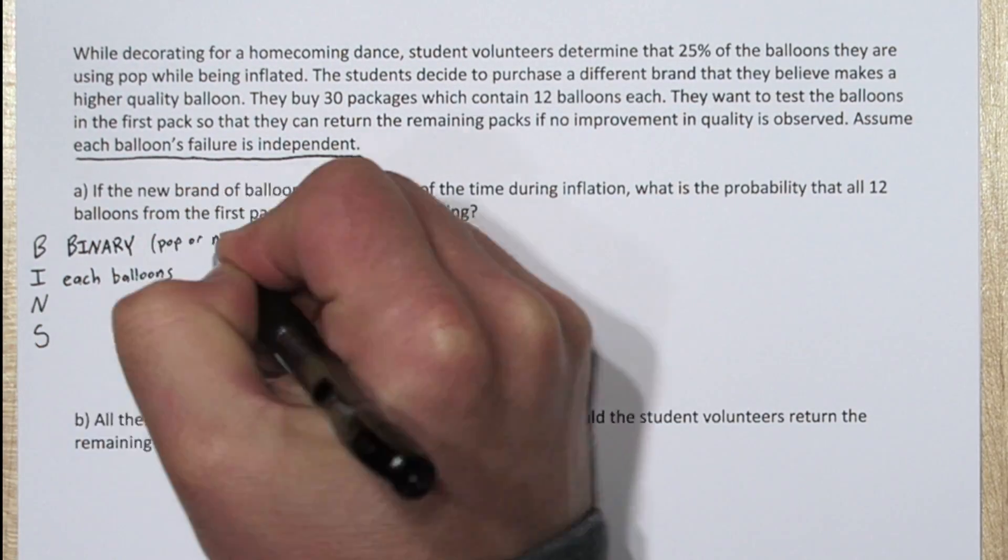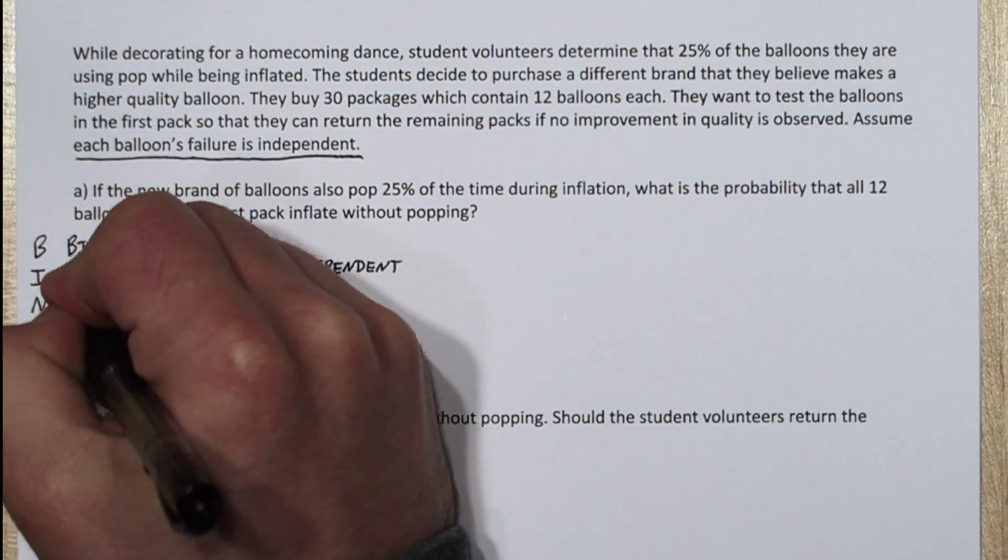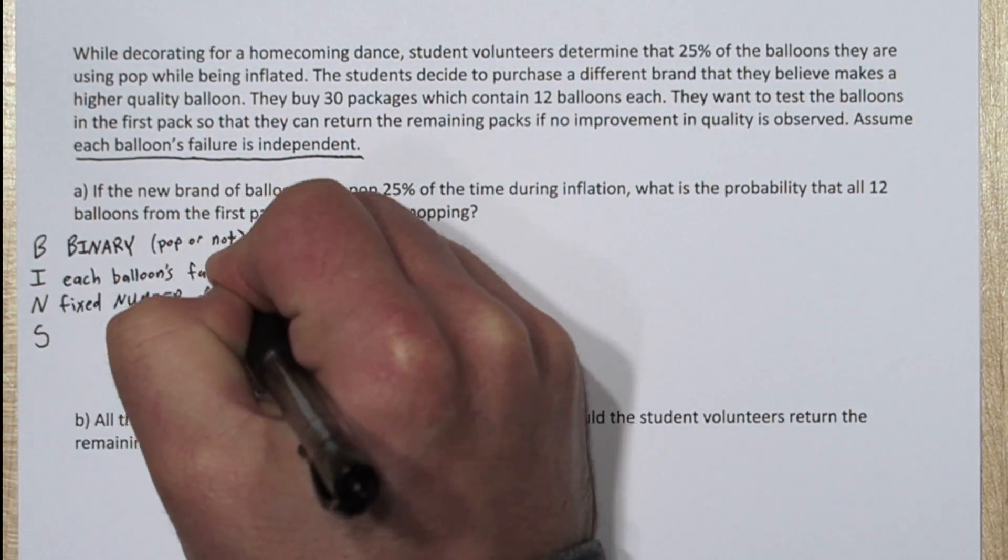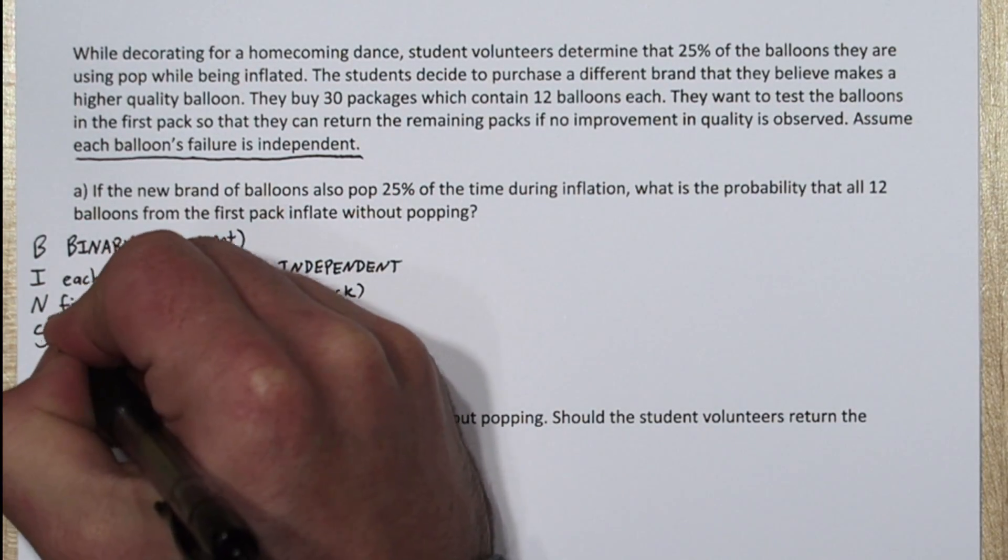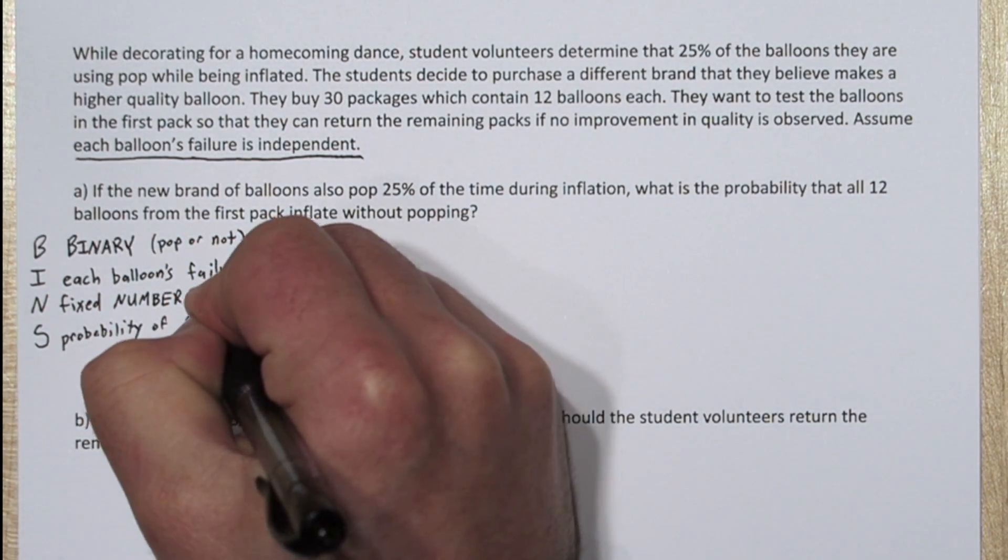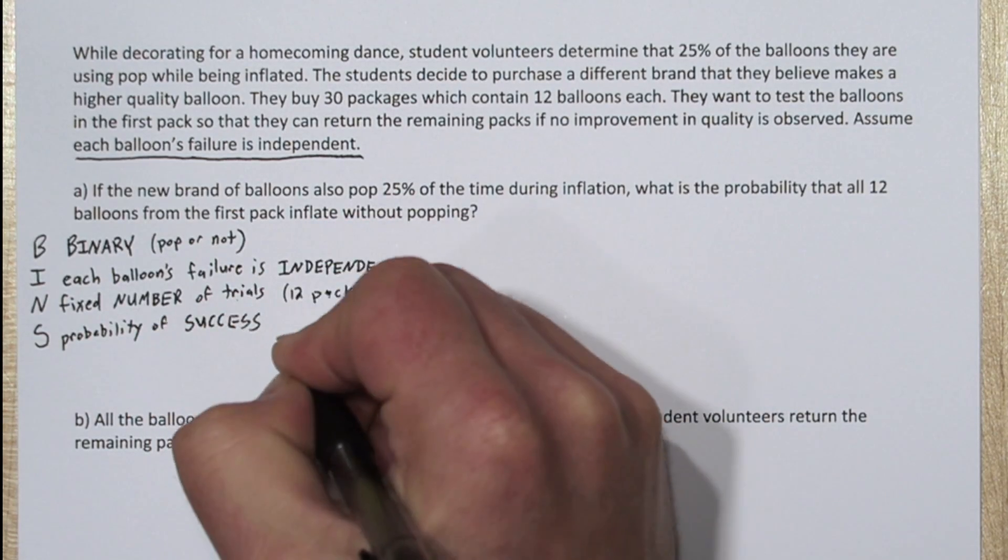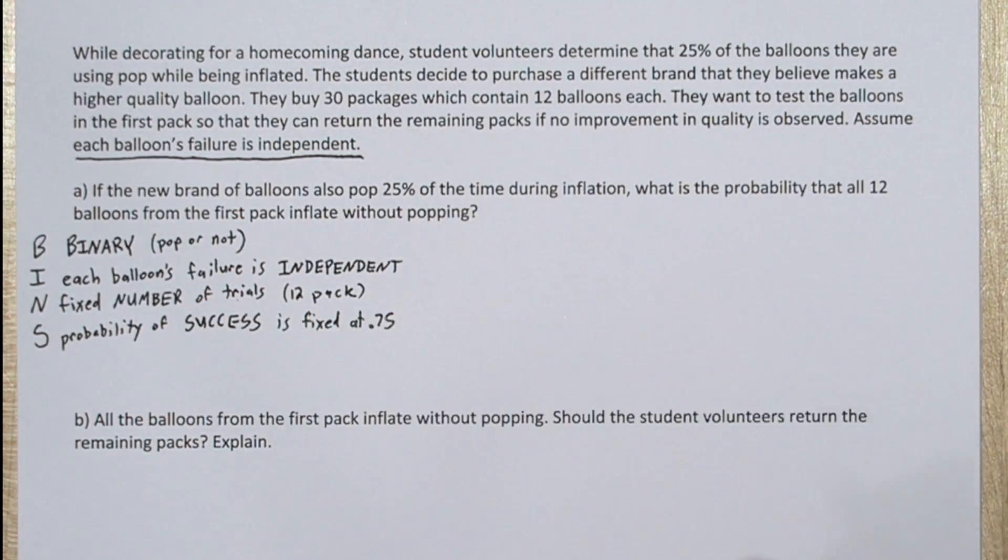Second, in the stem of the problem it says each balloon's failure is independent. Third, there's a fixed number of trials. We're checking all 12 balloons in the 12-pack. And finally, the probability of success is fixed at 0.75. If the probability of the balloons popping is 0.25, the probability that they do not pop is 0.75 for every balloon.